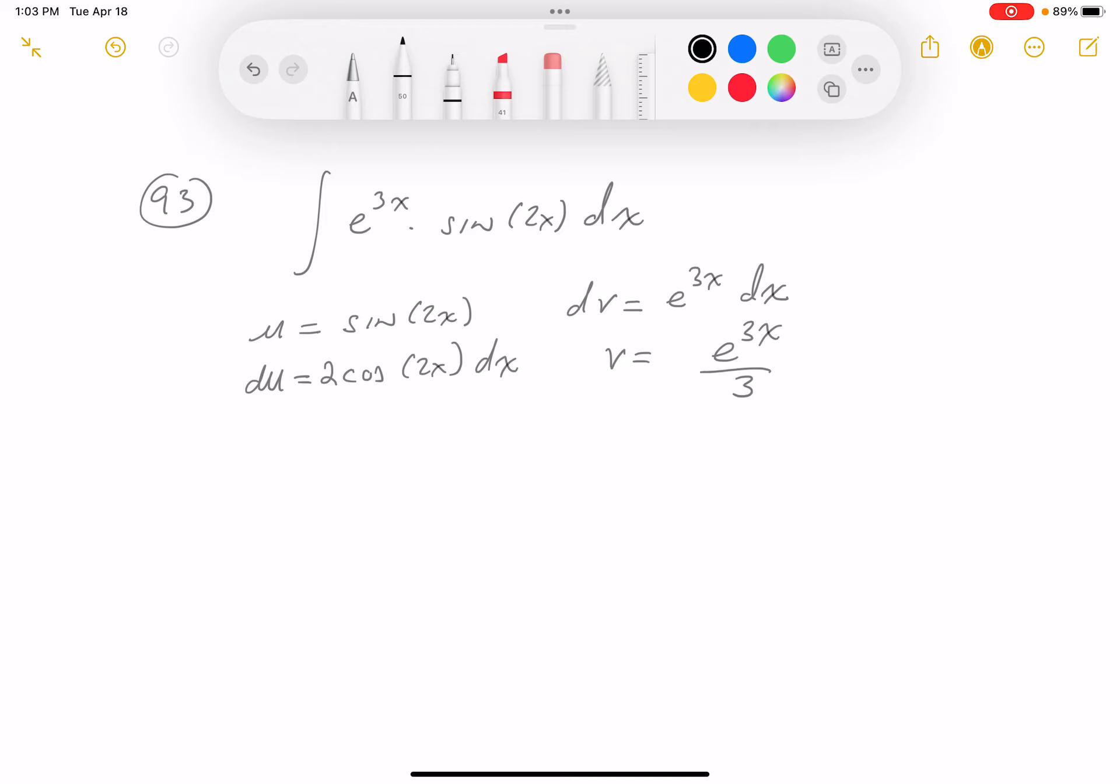All right, so I'm ready to write down my first step. That's going to be uv, so e^(3x) sin(2x) over 3 minus—it's going to be v du now—so it's e^(3x) over 3, and I see a 2 and cos(2x) dx.